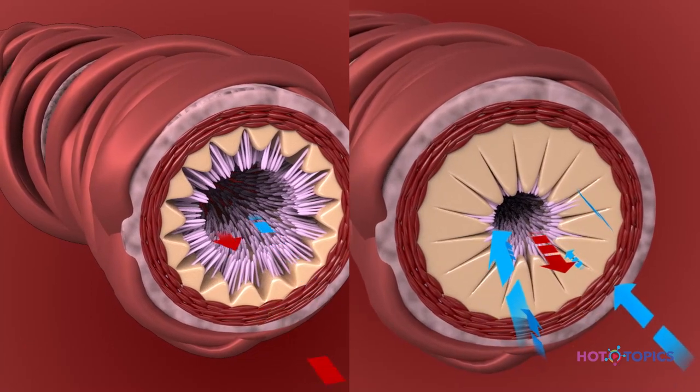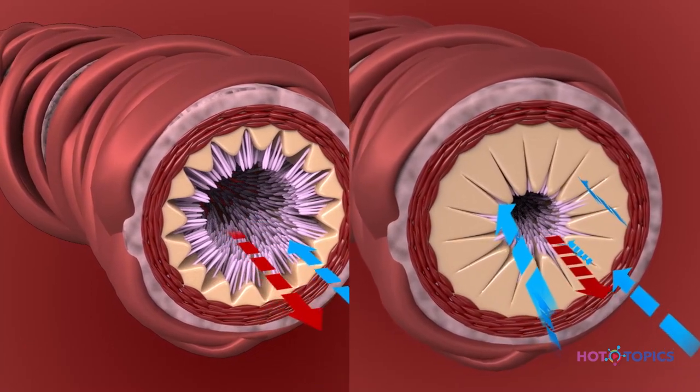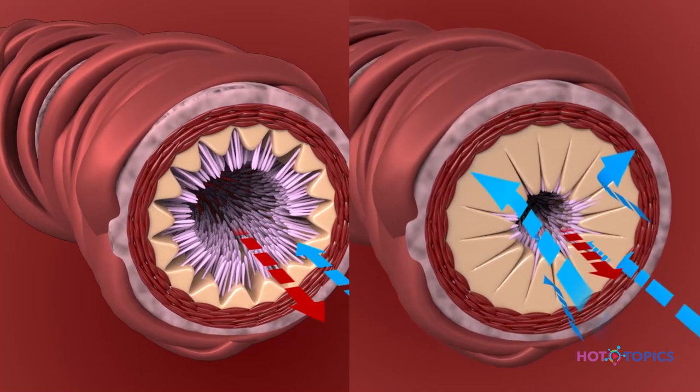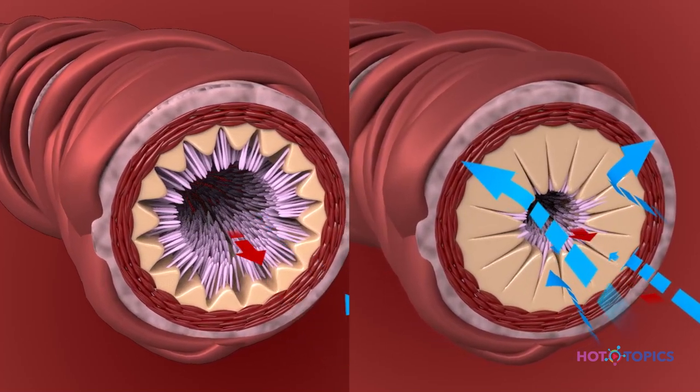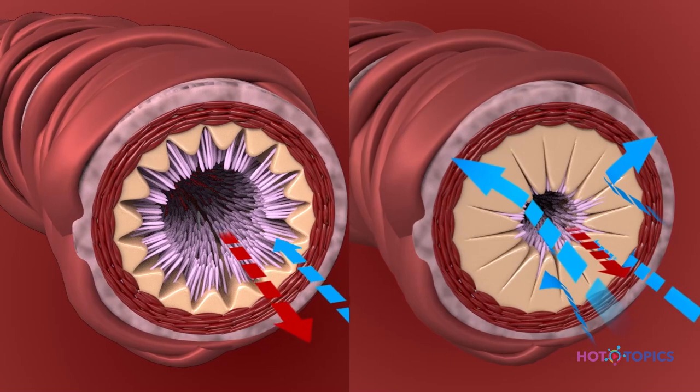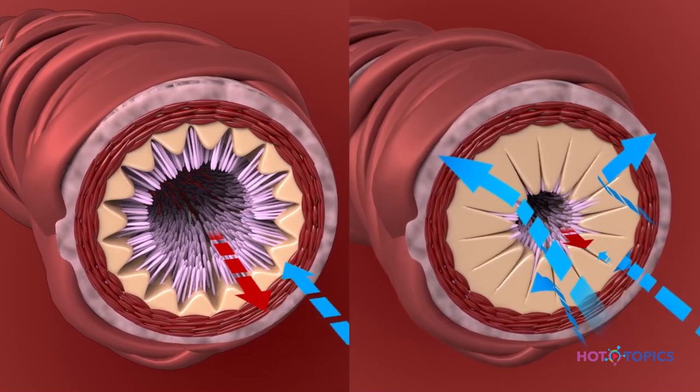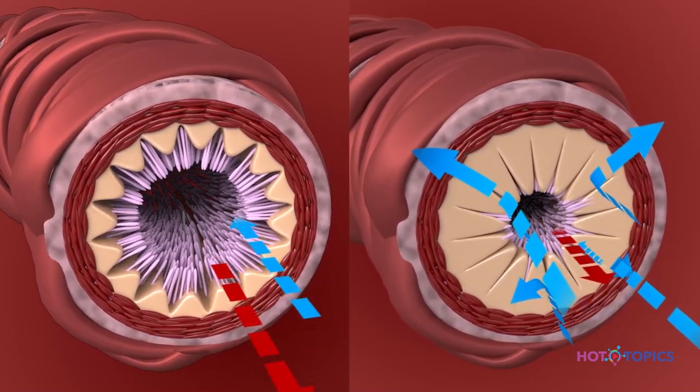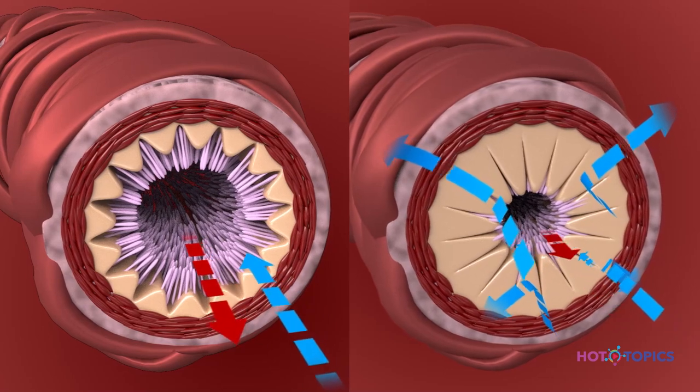Since airway resistance is inversely related to airway radius to the fourth power, any structural abnormality that narrows luminal diameter will greatly enhance airway resistance and exaggerate the effects of smooth muscle constriction.